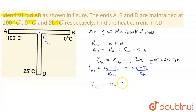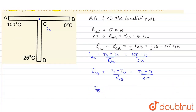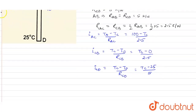Similarly, the heat current in rod CB is (Tc − temperature at B) divided by the thermal resistance of CB. Temperature at B is 0°C and the resistance of CB is 2.5, so it equals Tc / 2.5. For rod CD, the heat current is (Tc − temperature at D) divided by resistance of CD, which equals (Tc − 25) / 5.